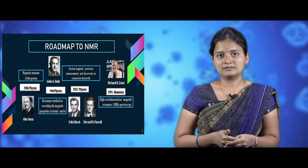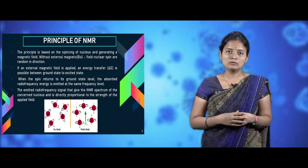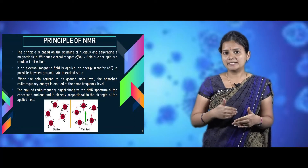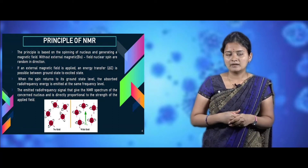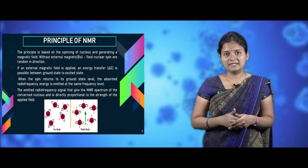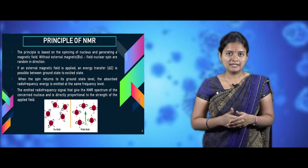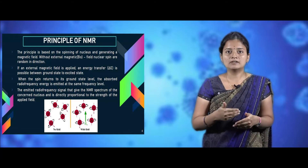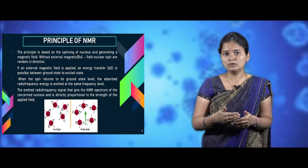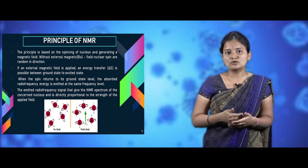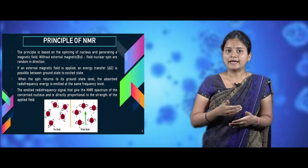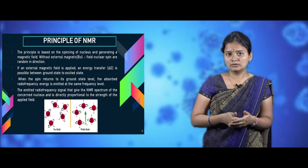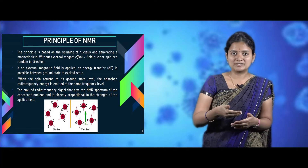The principle of NMR mainly depends on the spinning properties of the nucleus and their interactions. Without a magnetic field, the nuclear spin will be random in nature. When we apply a strong external magnetic field to the molecule being analyzed, the strong magnetic field causes energy transfer, which causes the molecule to travel from the ground state to the upper state.